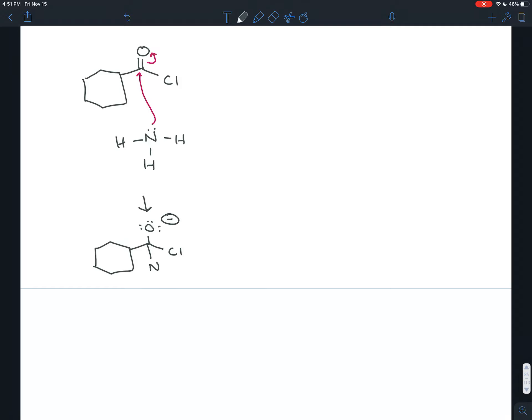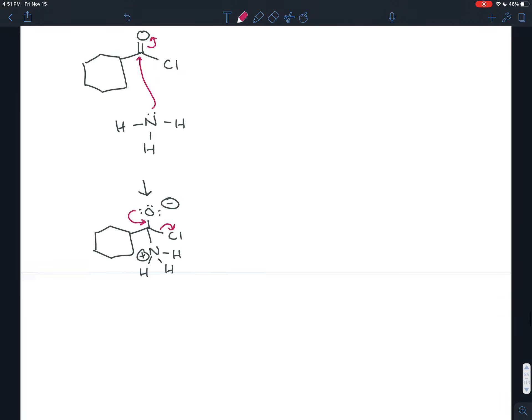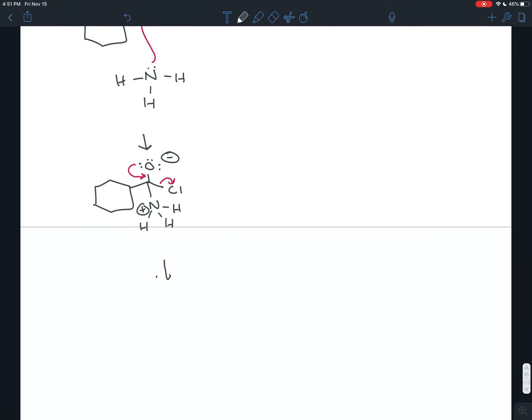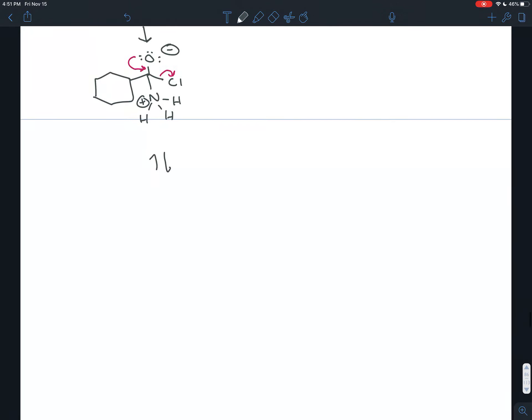The oxygen has a full negative charge. The nitrogen, which now has four bonds, has a full positive charge. The oxygen slaps back down and kicks the chlorine leaving group off, so that's loss of a leaving group, and here we have the carbonyl again bonded to the nitrogen with three bonds to hydrogen.